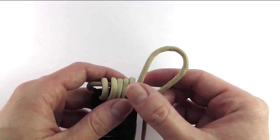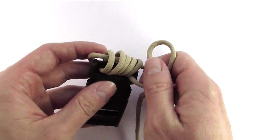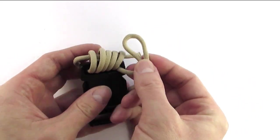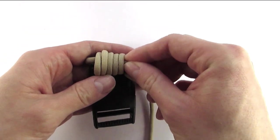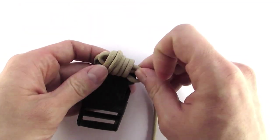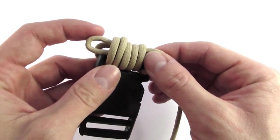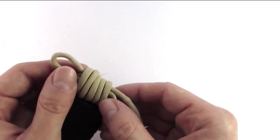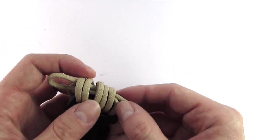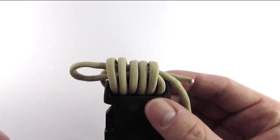Now with the other end, our working end, we're going to make a bite basically like this and we're going to tuck it under the loops. This is the first step in the technique. We feed it under the loops. Then we're going to re-tighten the loops.